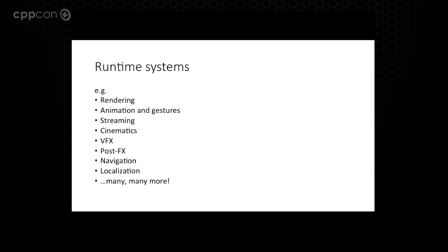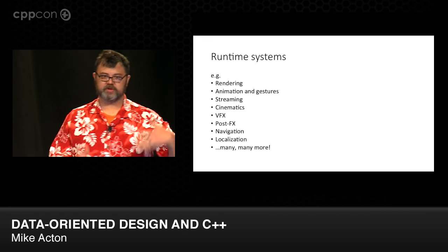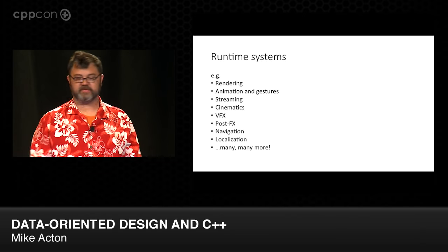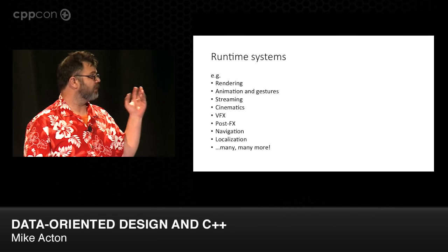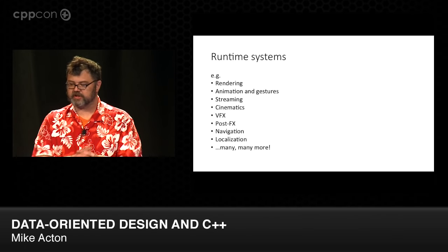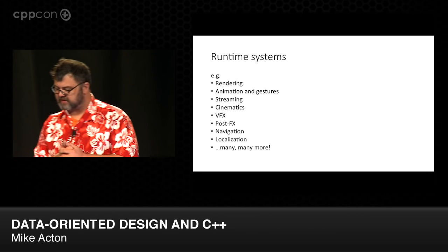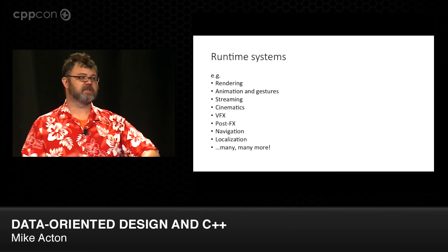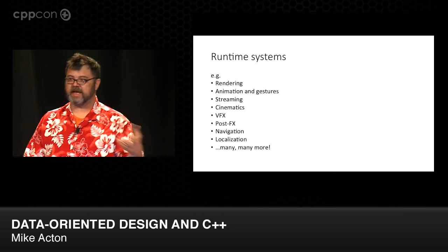As a team, we generally build the runtime systems, especially the systems that require the most performance — the most used in a game as far as the amount of data being transformed. Examples are the rendering system, animation and gestures, streaming, cinematics, visual effects, post effects, navigation, localization — basically all the big systems that are not specifically the game itself.